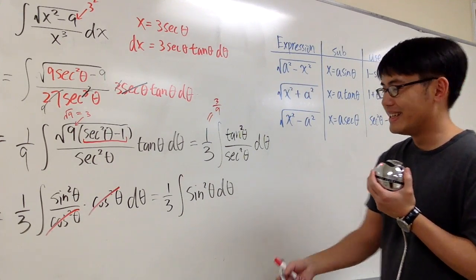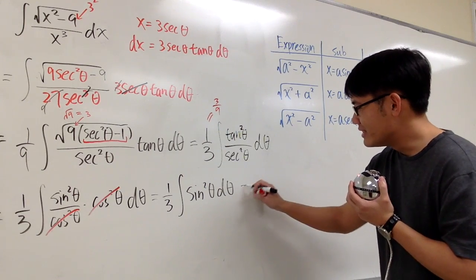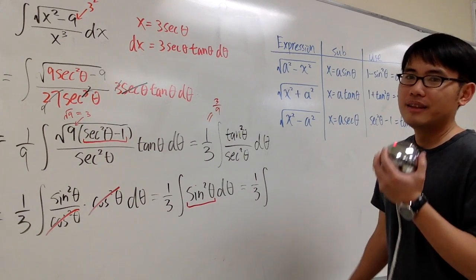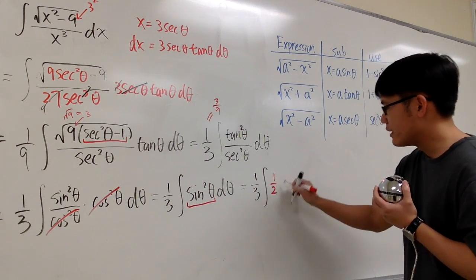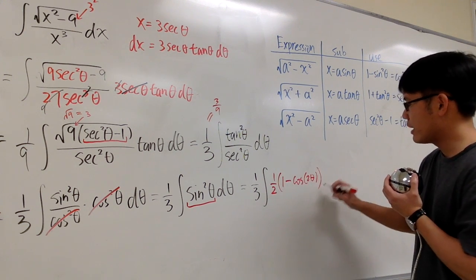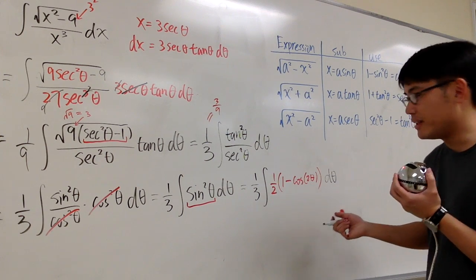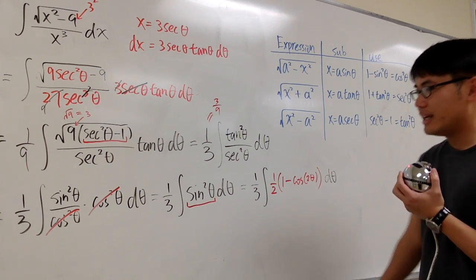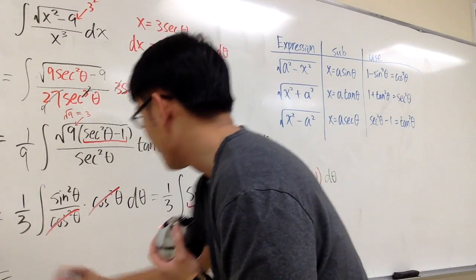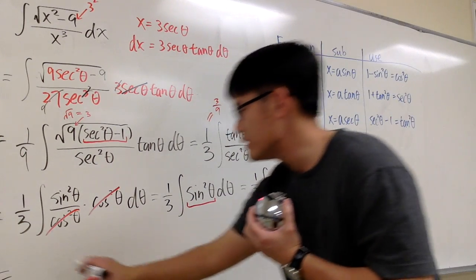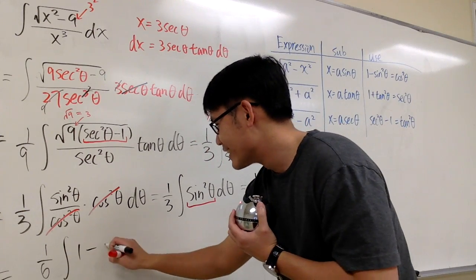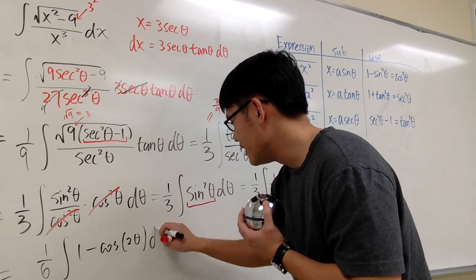To integrate sine squared theta we use the power reduction formula. So this is the same as integrating one third times one half times the quantity one minus cosine of two theta, d theta. That gives us one sixth times the integral of one minus cosine of two theta d theta.